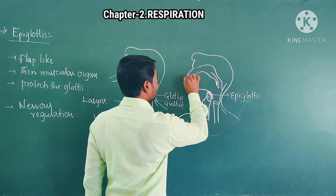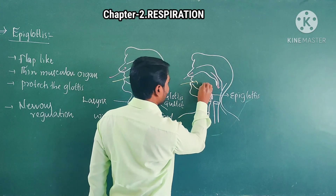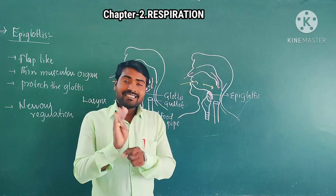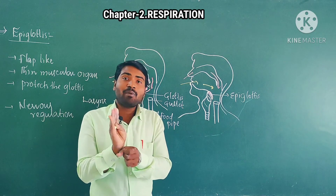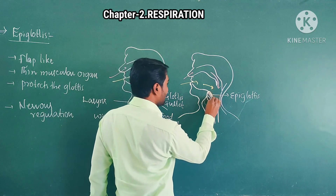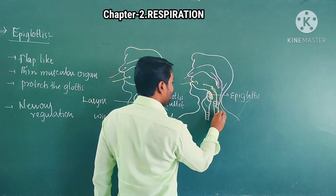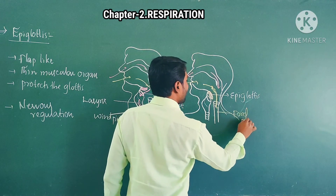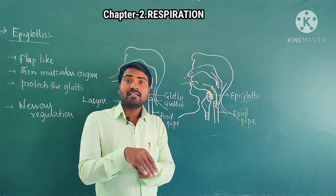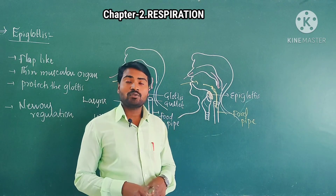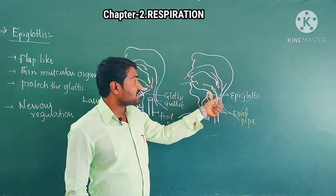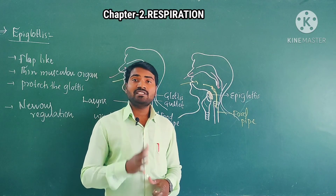At that time air enters, and similarly food also enters — but through different routes. During swallowing, the epiglottis closes the glottis and directs the food into the food pipe. So the traffic of air and food is kept proper by this flap-like structure called the epiglottis. Proper functioning of the epiglottis requires nervous regulation.